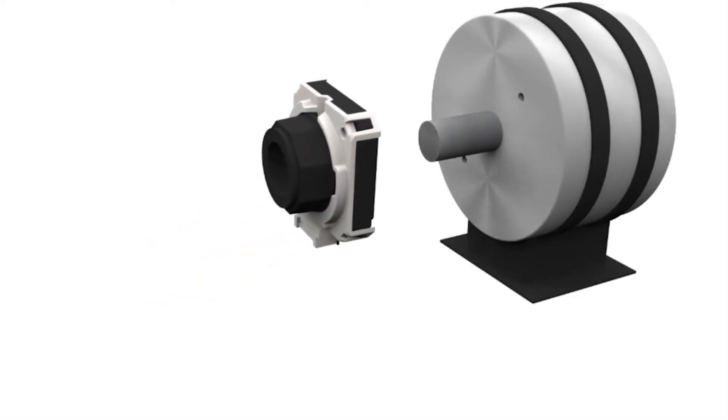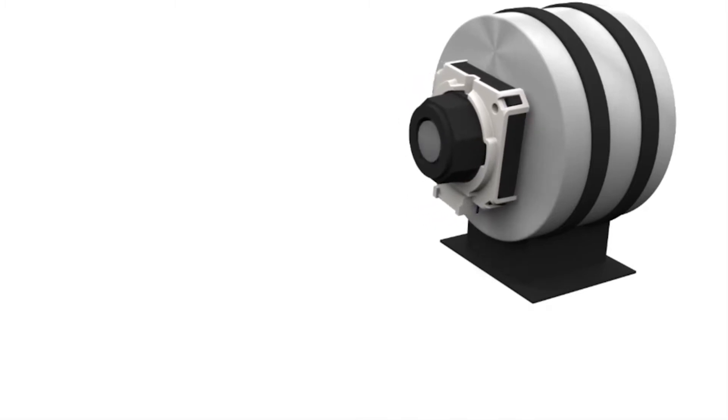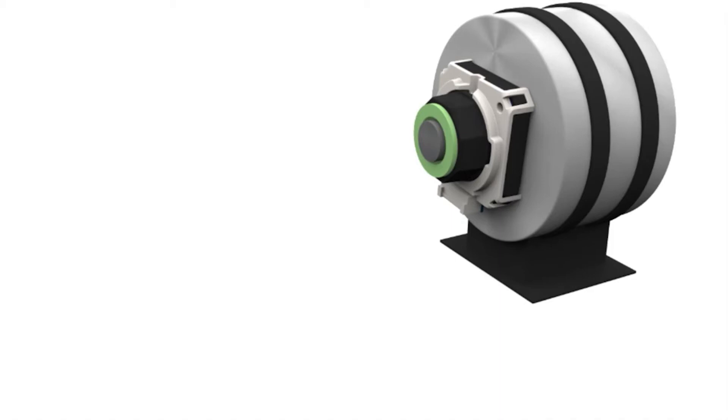The AMT 13 series mounting process varies slightly in that the encoder housing mounts to the motor without the use of a base plate. With the AMT 11 series, the adapter just makes a friction fit with the motor shaft.